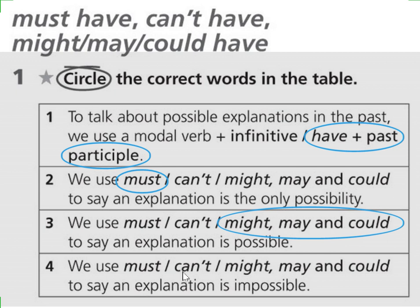And the last one: we use must or can't or might, may, and could to say an explanation is impossible. We are so sure that it's impossible that it happened in the past — we are so sure that it didn't happen. So in this way, the answer is can't have plus past participle. Please keep these four points in mind while you are talking about past modal verbs.